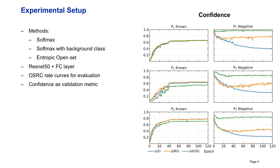To show the usability of the protocols, we evaluate three common approaches: the standard softmax, the softmax with background class, and the entropic open set loss with ResNet-50 models. For evaluation, we use the open set classification rate curve. Additionally, we use the newly developed confidence validation metric, which allows us to see how well a classifier has learned to separate known from negative classes. For instance, the confidence figure shows that as training progresses, the confidence in known samples increases at the cost of reducing confidence in negative samples.